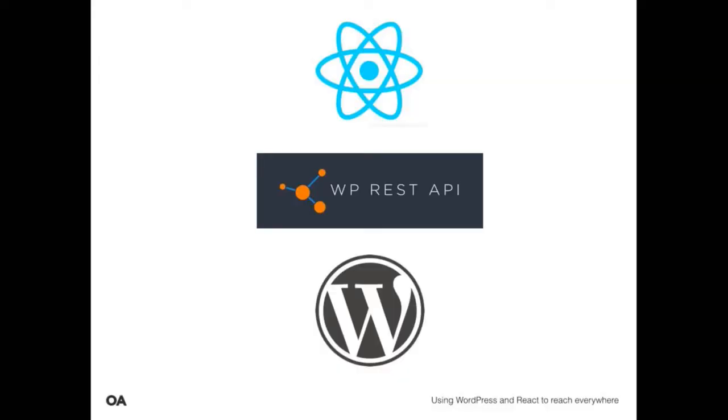Our setup is that we have a basic WordPress setup with as few plugins as possible. We have the API on top of that with both default endpoints and custom ones. Then we have React, which we use in three different ways at the moment, just to ease the transition. We have decided that we're going to move over completely to React and not rely on anything else — but that's quite a hard transition, so we're taking it step by step.